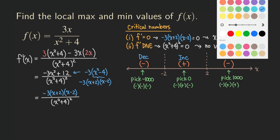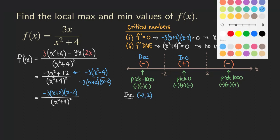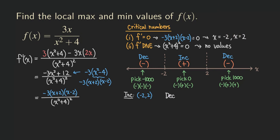We can now write out all the information. The increasing interval is from negative two to two. The decreasing intervals are from negative infinity to negative two, and then from two to positive infinity.